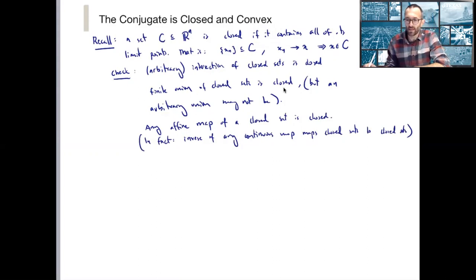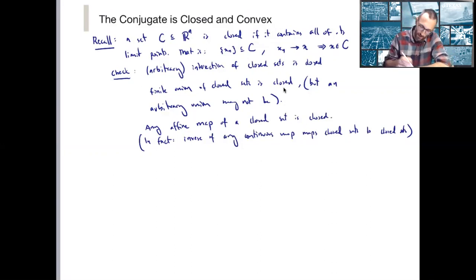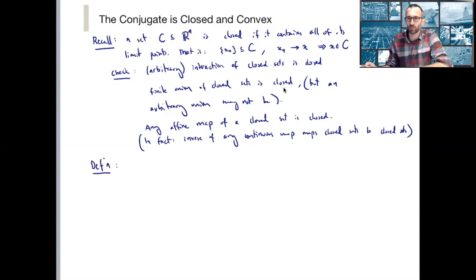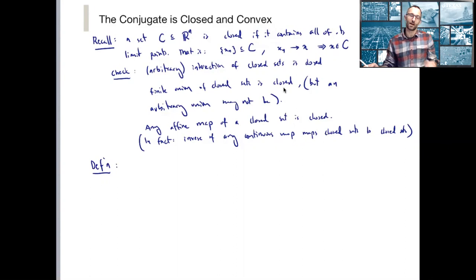You should also check that any affine map of a closed set is closed. In fact, the inverse of any continuous map maps closed sets to closed sets. The affine map result is saying that if I do any kind of linear transformation, I'm going to map from a closed set to a closed set. So now I can give a definition: a function is called closed if and only if its epigraph, which is a set in R^(n+1), is a closed set.